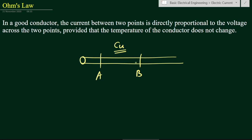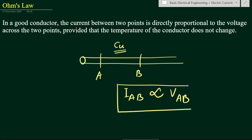The current flowing from point A to point B, that is I_AB, is directly proportional to the voltage across these two points. These two points can be anywhere within this conductor, across the longitudinal direction of this conductor. So according to Ohm's Law, the current flowing through this conductor is directly proportional to the applied voltage.